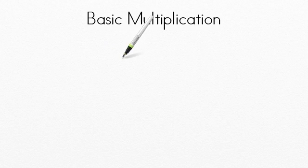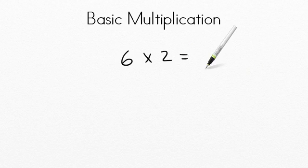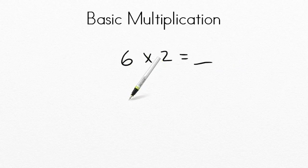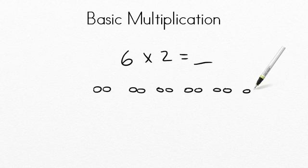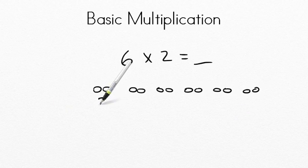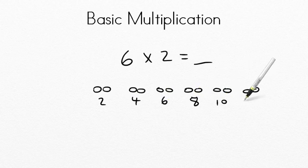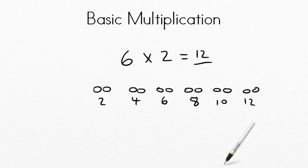Let's try another one together. Here we have six times two. Let's find the product together. We say we have six groups of two, so the first thing we want to do is draw them out: one, two groups, three groups, four groups, five groups, six groups. Can you count that up to figure out the answer? Well, if we skip count these: two, four, six, eight, ten, twelve. You have a product of twelve. Six groupings of two. Nice work.